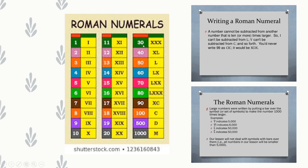Continuing: 30 = XXX. Since a numeral cannot repeat more than 3 times, 40 = XL (L − X = 50 − 10). 50 = L, 60 = LX (50 + 10), 100 = C, 500 = D, 1000 = M.